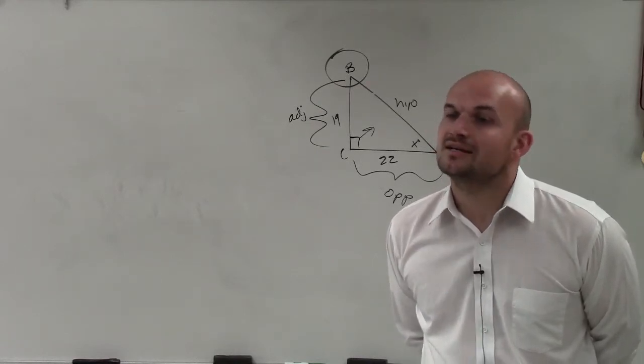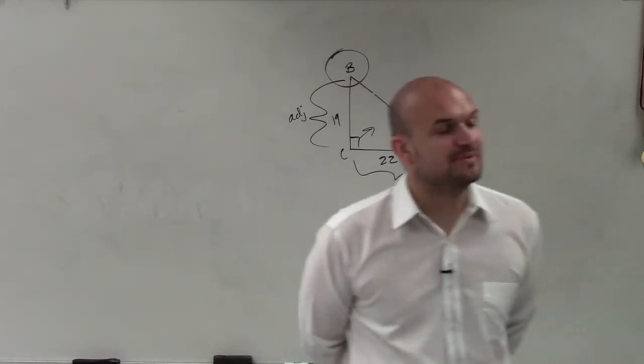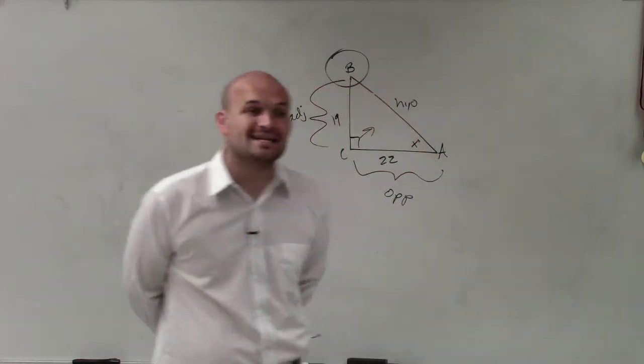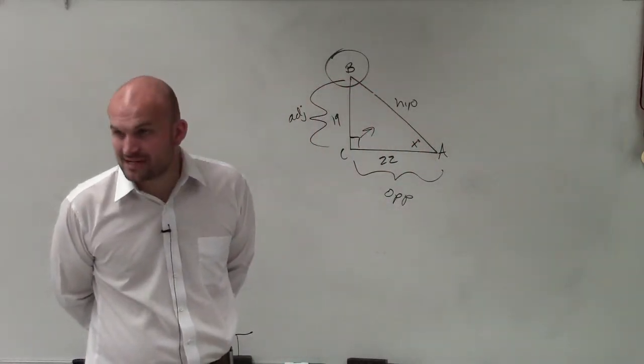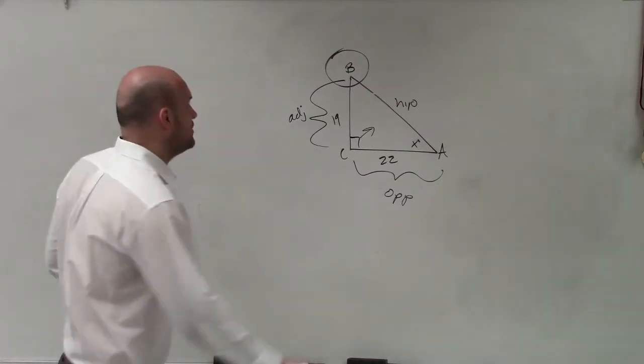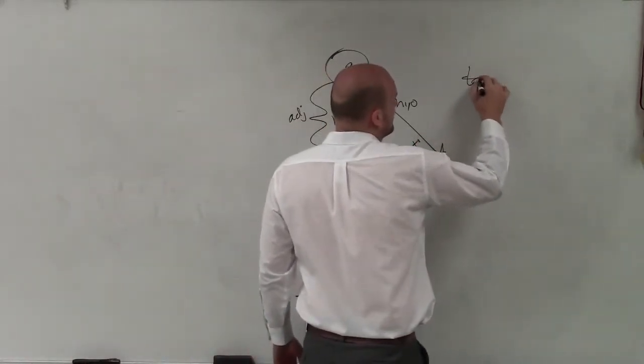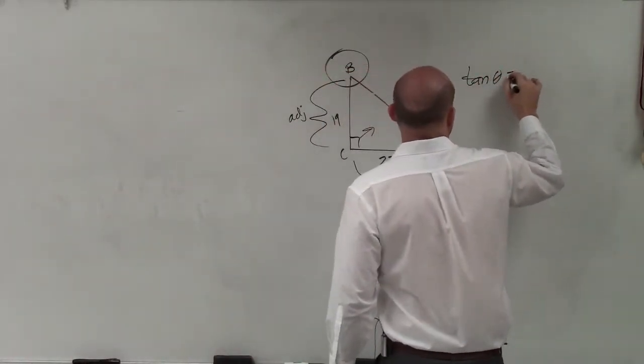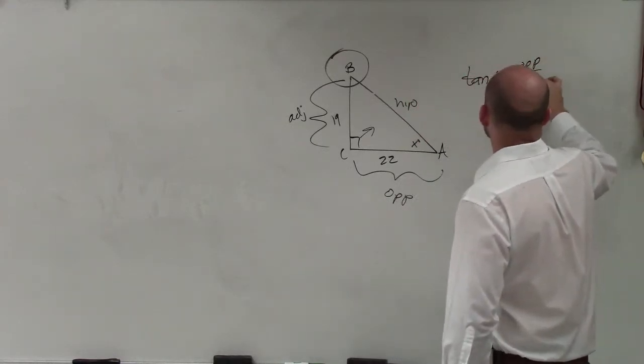Tangent. And the reason being is because the tangent function does not deal with the ratio of the hypotenuse at all. Right? So if you guys remember, the tangent of any angle is equal to opposite over adjacent.